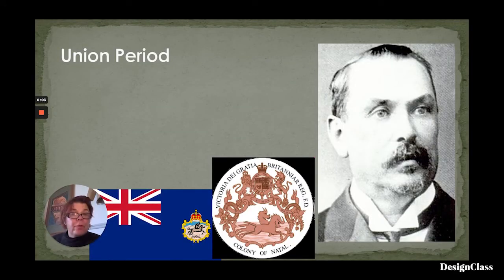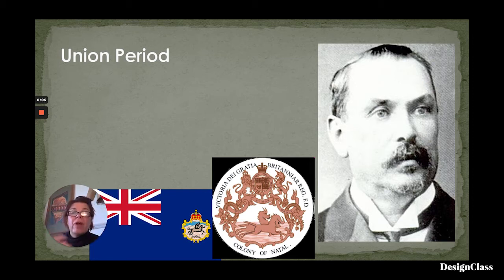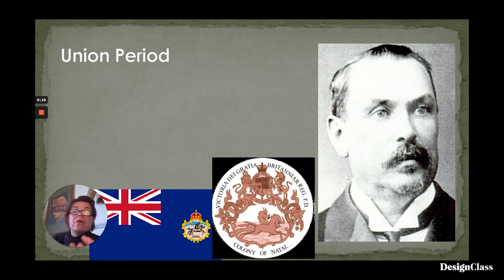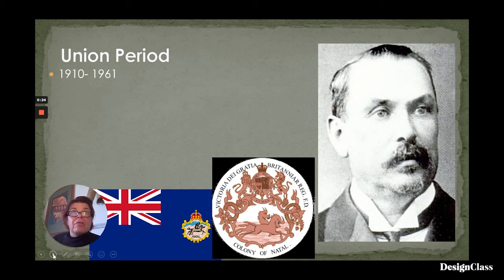Now we've got to Union. It's important to realize that Union wasn't only a geographical construct, it was also very significantly a cultural construct. This cultural construct put together the Boers and the British — near the Twain shall meet. The Union period is significantly that period between 1910, at the time of Union, and 1961, which is when South Africa became a republic.